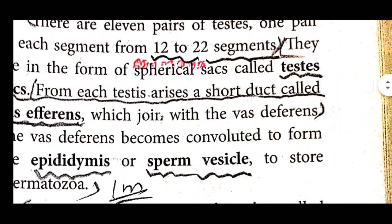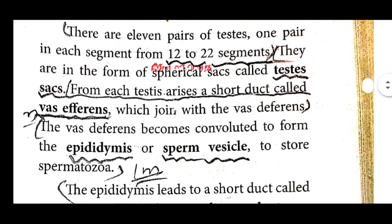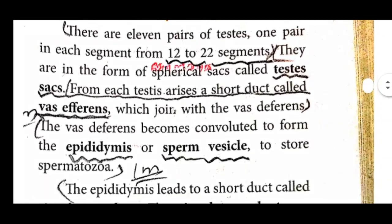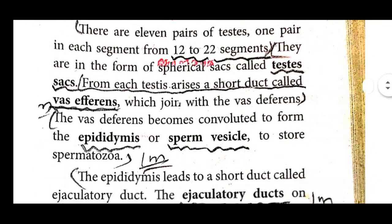From each testis arises a short duct called vas deferens, which joins with the vas deferens of the other side. The vas deferens becomes converted to form epididymis or sperm vesicles to store spermatozoa.